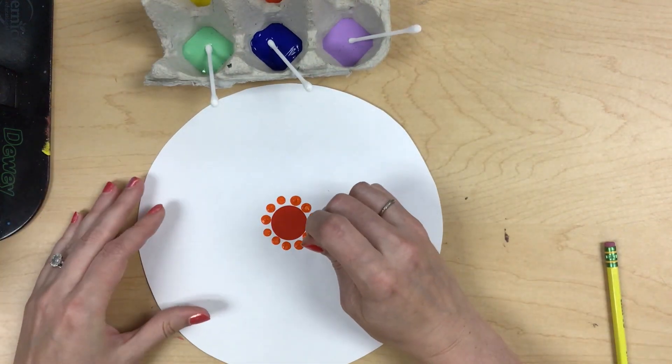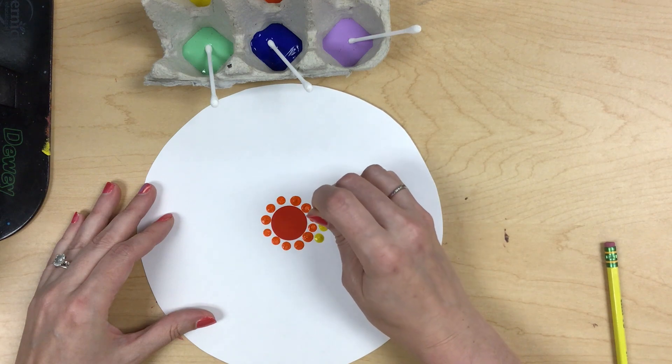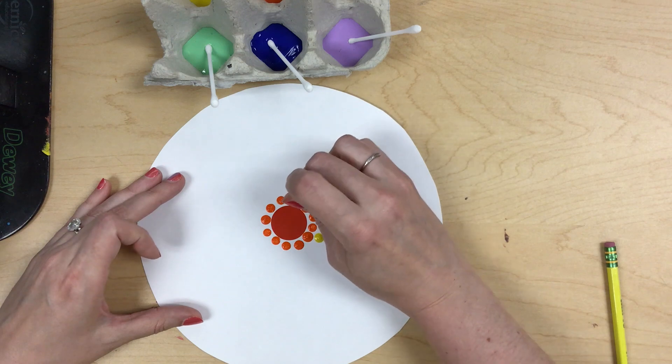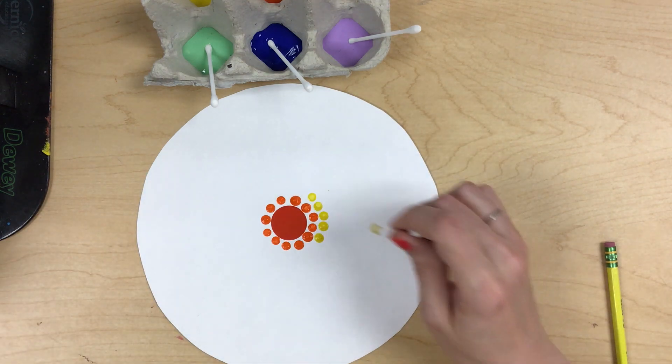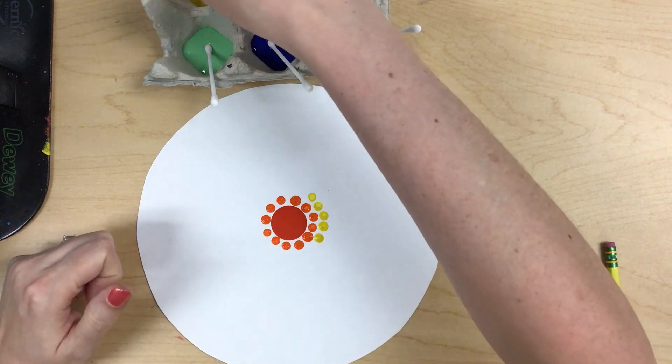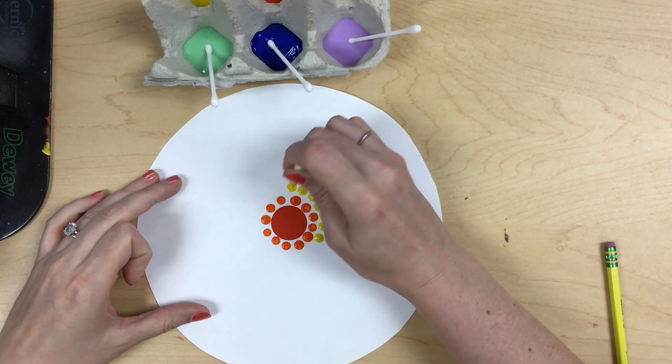Now you can either keep going around with bigger and bigger concentric circle rings out like this, or if you'd like to do it differently you can. Maybe you want to have lines coming out more like a sun. It's your choice how to make your pointillism dot.